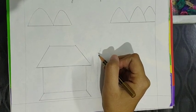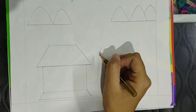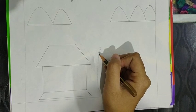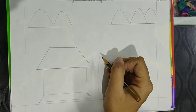Now we will make a tree near a hut. For making a tree, firstly, you have to make two parallel curved lines.